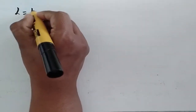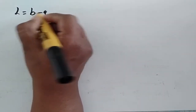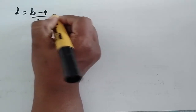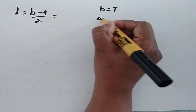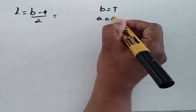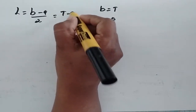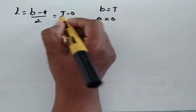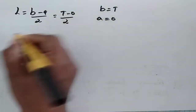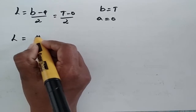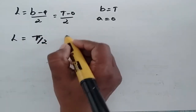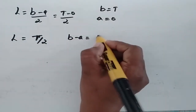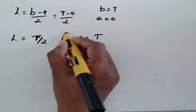Here, l is equal to (b minus a)/2. Since b is equal to T and a is equal to 0, this gives l = (T − 0)/2, so l is equal to T/2, and b minus a is equal to T.